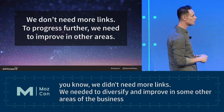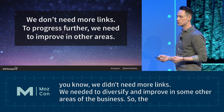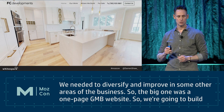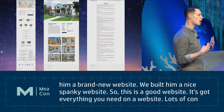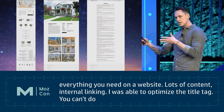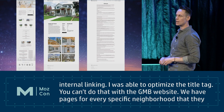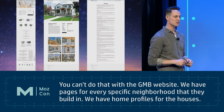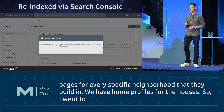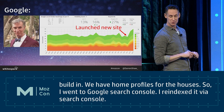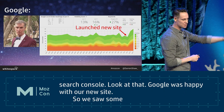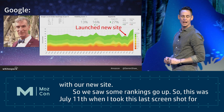The big gap was our pretty lame one-page GMB website, so we built them a brand new website. It looked great - lots of content, lots of internal linking, optimized title tags, pages for every specific neighborhood they build in, and home profiles for all the houses. It's a solid, well-optimized website for local search. I re-indexed it via Google Search Console, and it had a positive impact - Google was happy with the new site and we saw some rankings go up as of July 11th.